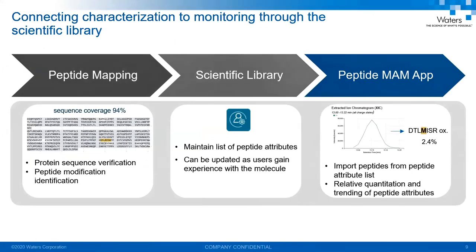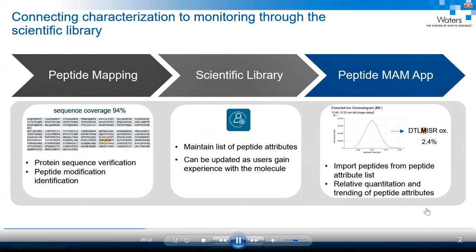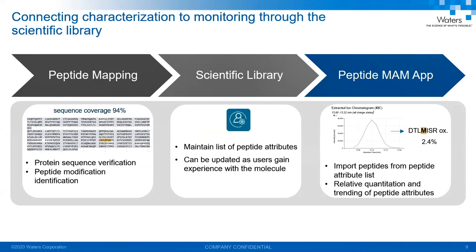Once data acquisition is finished using the BioAccord system, the next step is data processing using the peptide MAM application, starting with a list of product quality attributes imported from the scientific library. Scientific library is a feature within the Waters Connect platform. During peptide mapping analysis, we identify modifications of peptides and our peptide quality attributes, then store that information in the scientific library. In a way, the scientific library acts as a bridge between peptide mapping analysis and peptide MAM data processing.